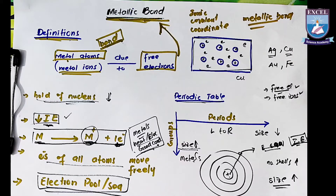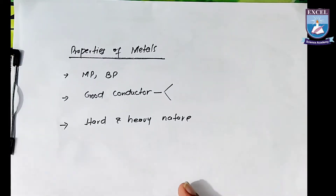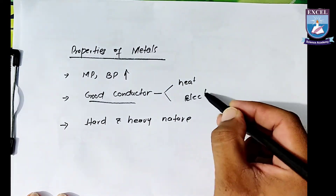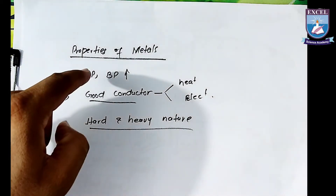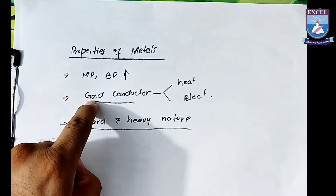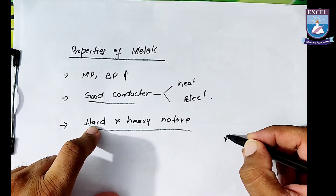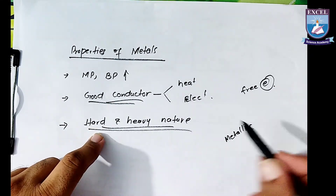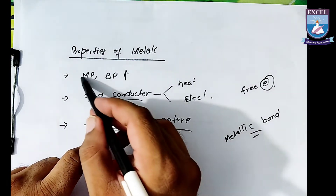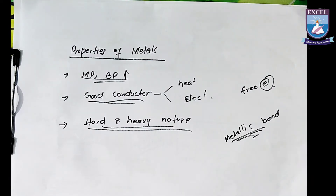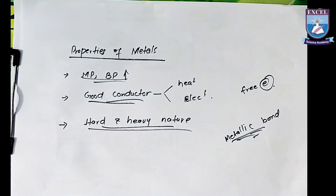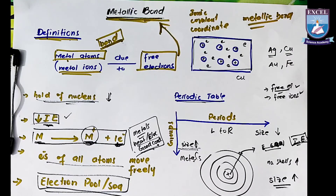This is a simple and easy topic. Let's look at the properties of metals: metals have high melting point and boiling point. We have learned they are good conductors of heat and electricity. They are hard and heavy in nature. The reason metals are good conductors is free electrons. The reason they are hard and heavy is the metallic bond. The reason for high melting and boiling points is also the metallic bond. This was our topic — very simple and interesting. You can remember this whole topic easily. Thank you, Allah Hafiz.